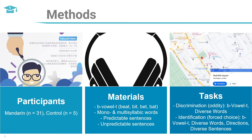Study 1 included 31 Mandarin speakers with 5 controls. The control performed at ceiling levels throughout, so results here will focus on the Mandarin group. Mandarin is well documented as having difficulty differentiating between the English front vowels E-I and E-A. This is explained by Flege's speech learning model and Best and Tyler's perceptual assimilation model for L2 learners. Mandarin has relatively few vowels, and the target vowels are not contrastive in Mandarin. The L2 sample was an advanced cohort with an average IELTS score of 7.4 overall and 8.1 for listening.